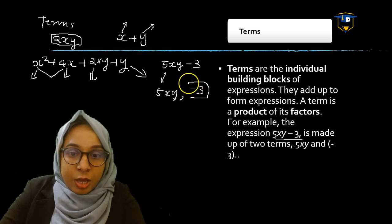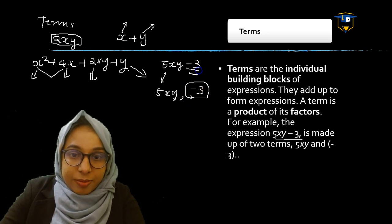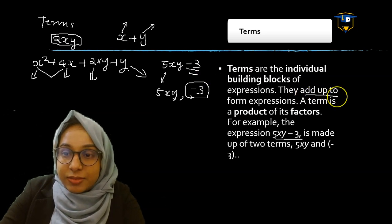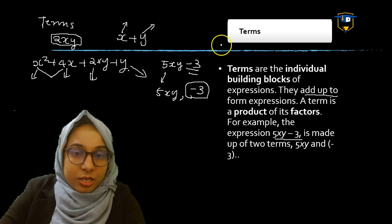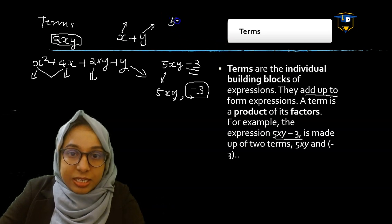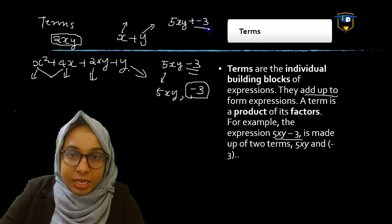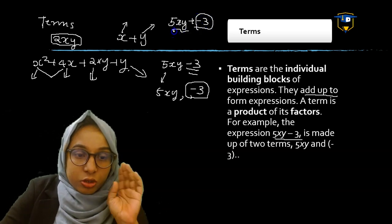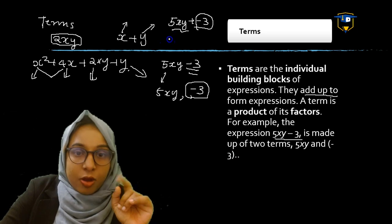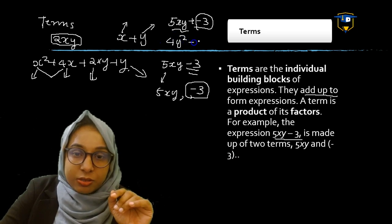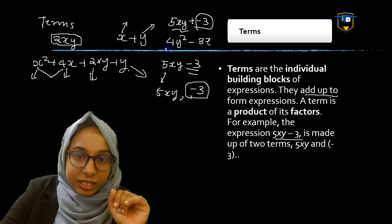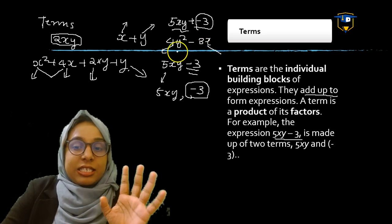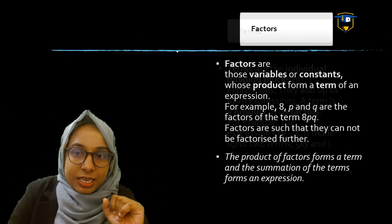You have to consider the sign with each term. Another example: 4y squared minus 3x — the first term is 4y squared and the second term is minus 3x. So we have studied terms.